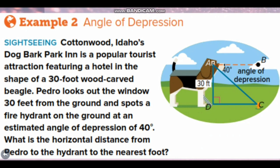Another example. Cottonwood Idaho's Dog Bark Park Inn is a popular tourist attraction featuring a hotel in the shape of a 30-foot wood-carved beagle. Pedro looks out the window, 30 feet from the ground, and spots a fire hydrant on the ground at an estimated angle of depression of 40 degrees. What is the horizontal distance from Pedro to the hydrant to the nearest foot?